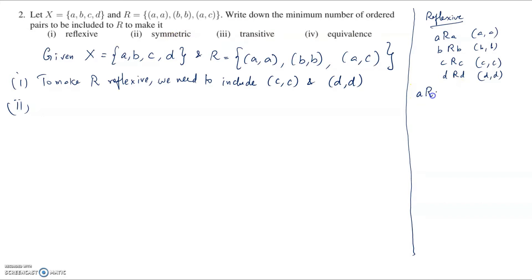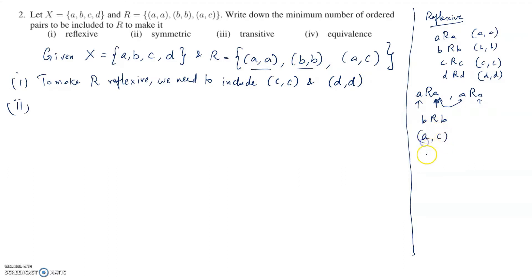Next, for the second condition — to make it symmetric. For (a,a): a is related to a, so symmetrically a is still related to a — that's already satisfied. For (b,b) similarly. Now we have (a,c), which means a is related to c. For symmetry, c must be related to a. Therefore we need to include (c,a).